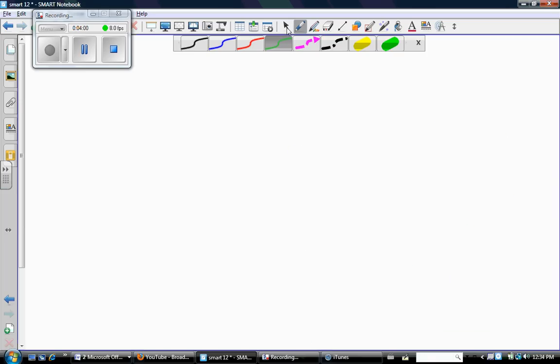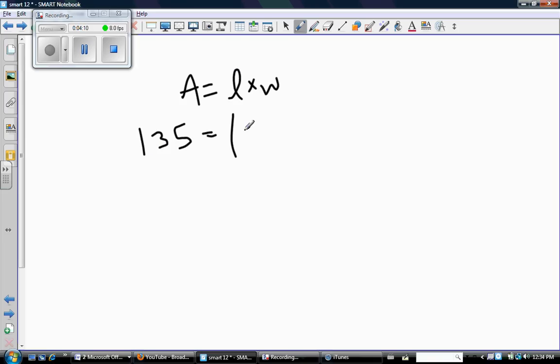And we'll write that mathematically and algebraically. So again, area is length times width. And we know that the area is 135. And we just found that the length was 10 plus 2x. And we found that the width was 4 plus 2x. So there's an equation. And all I have to do now is solve for x.